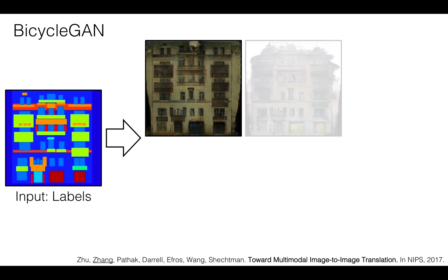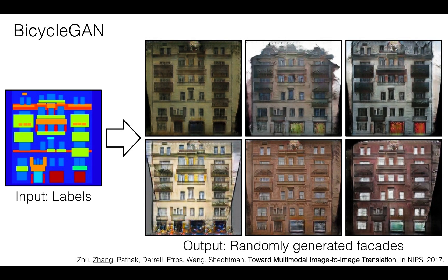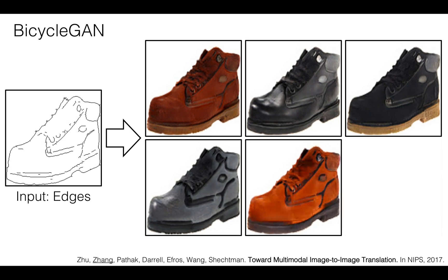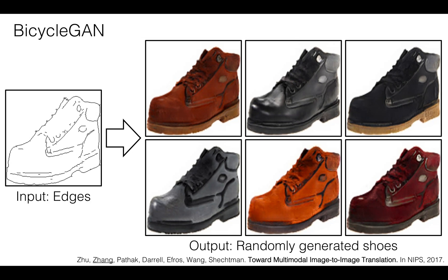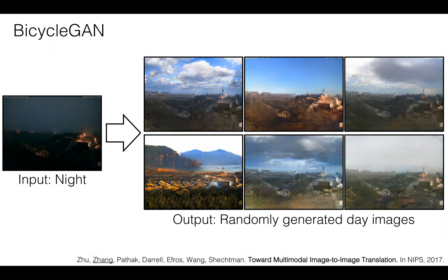Our method, BicycleGAN, is able to generate facades with different colors, textures, and structures. We can also translate this edge map to different shoes, or imagine what this night image might look like in the day.